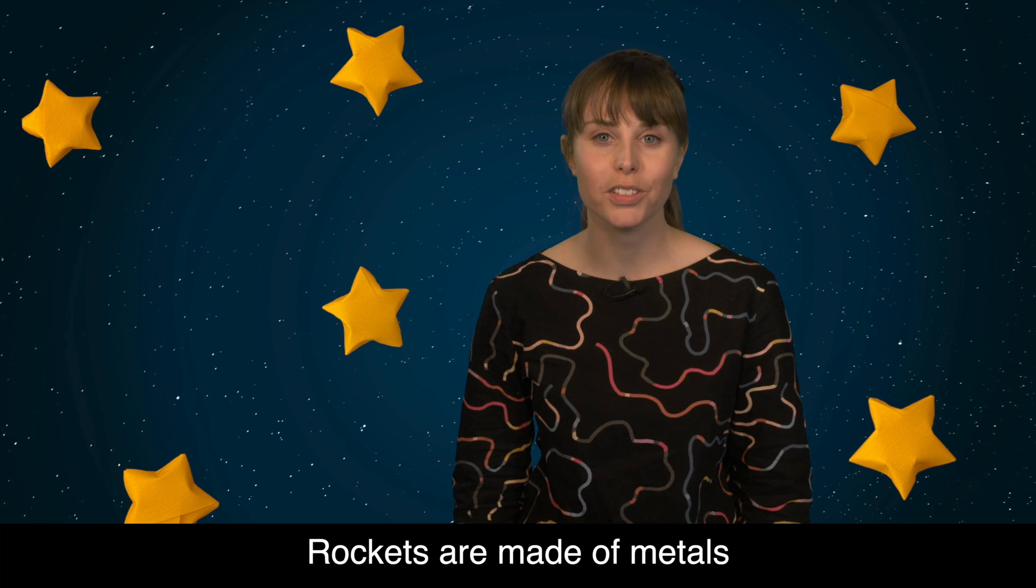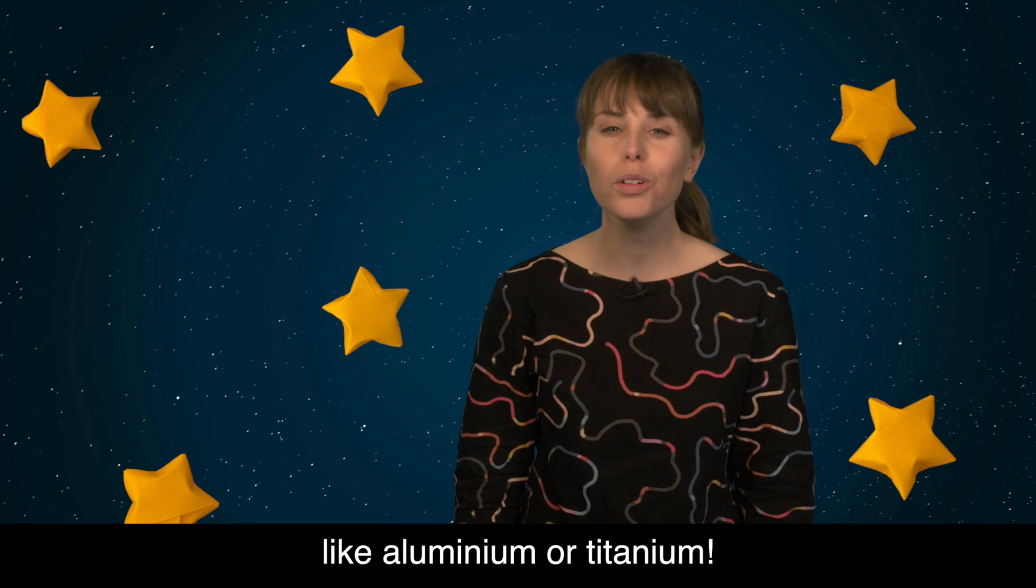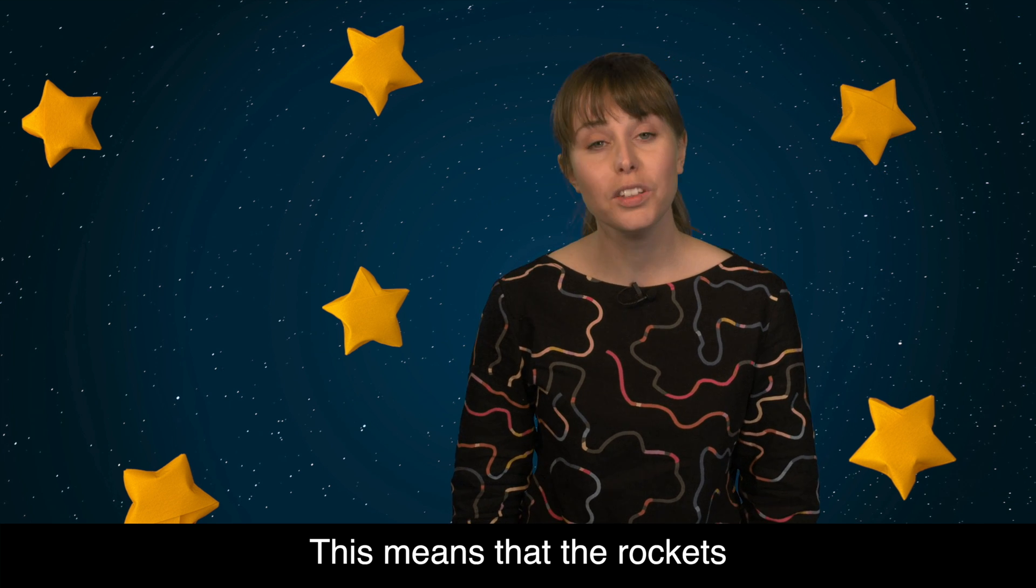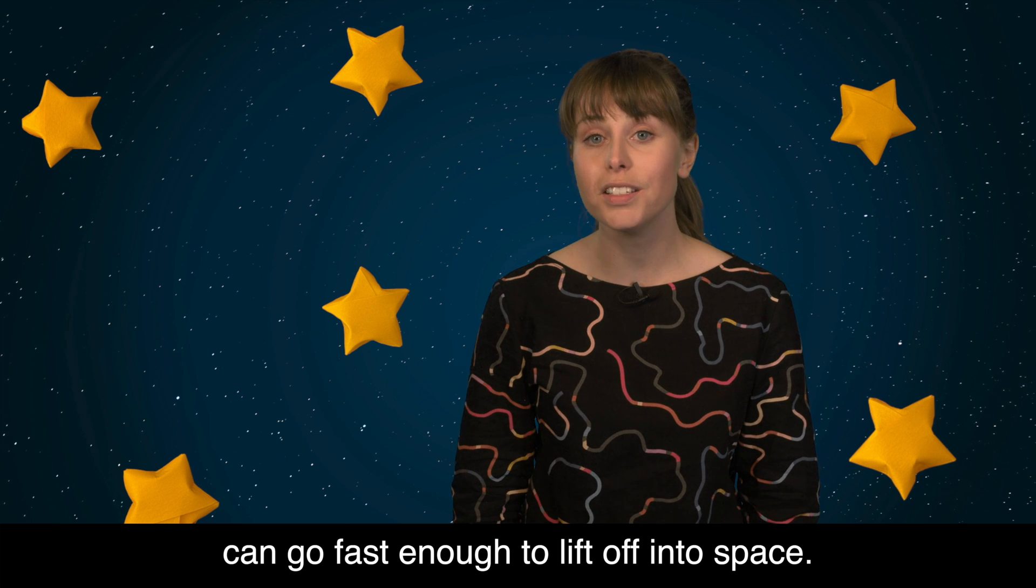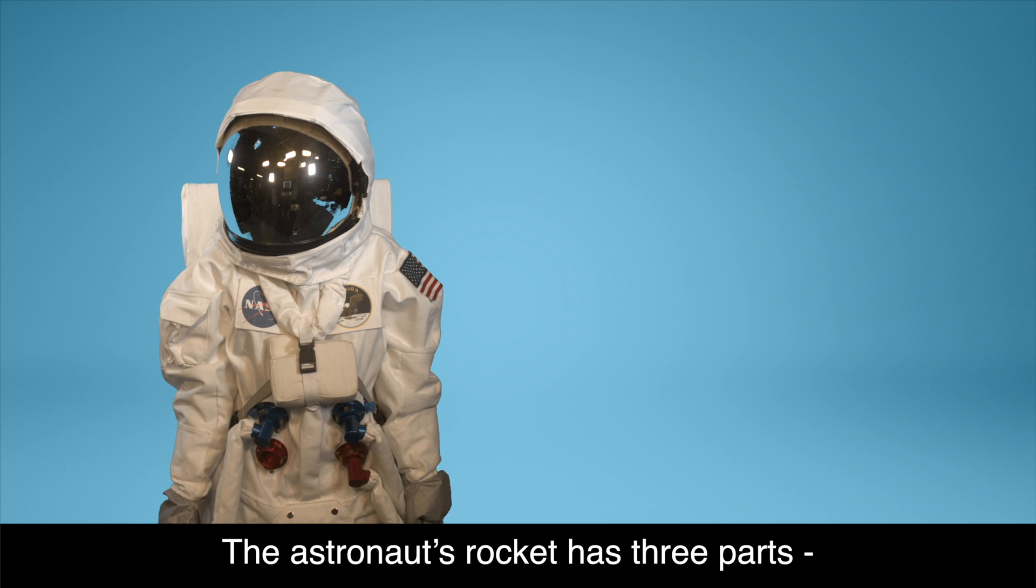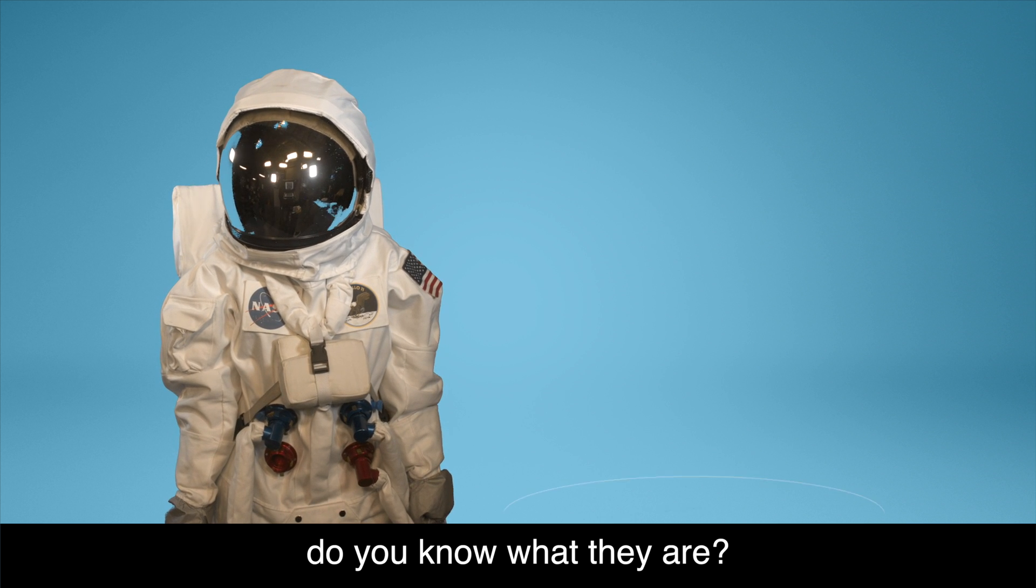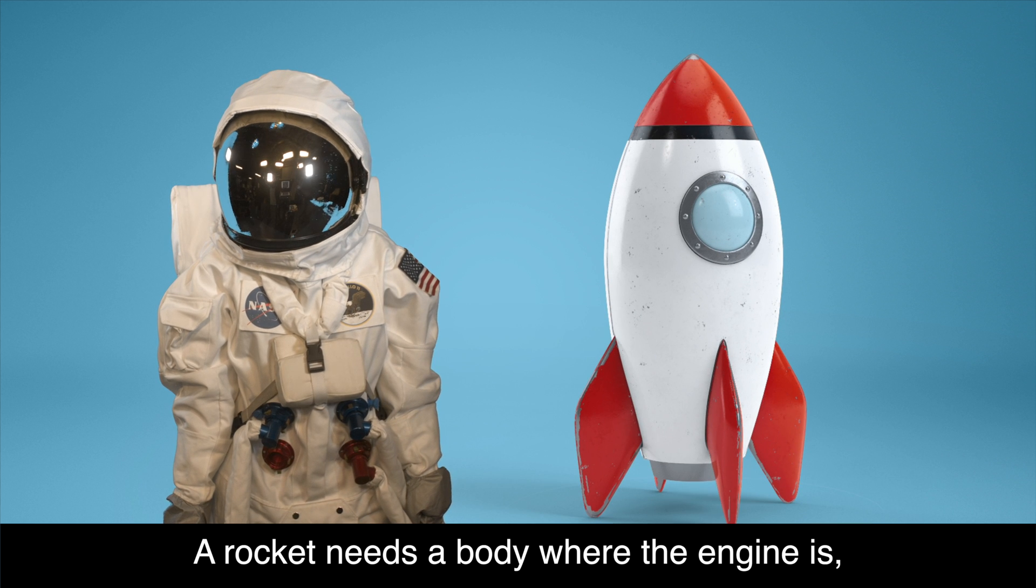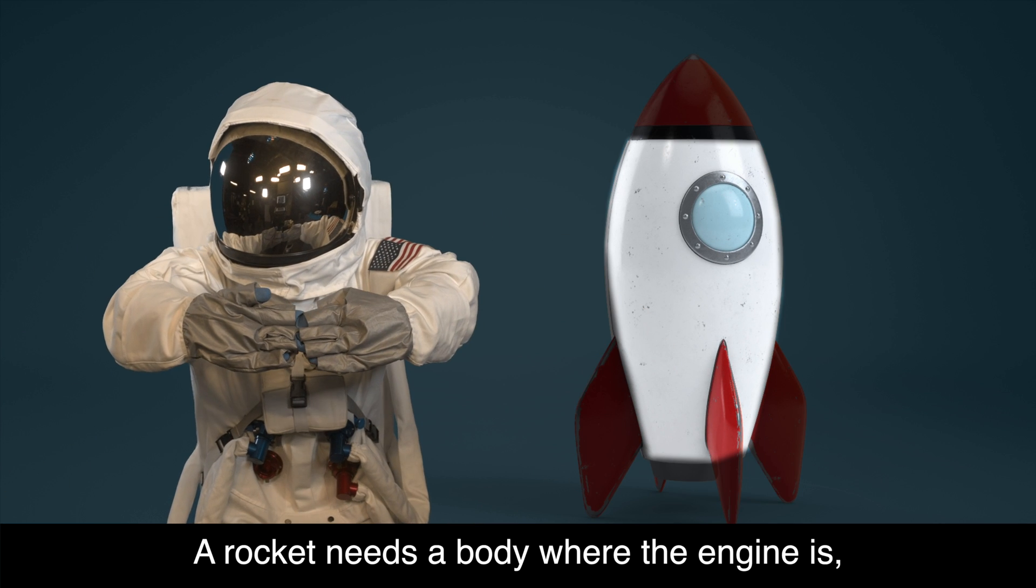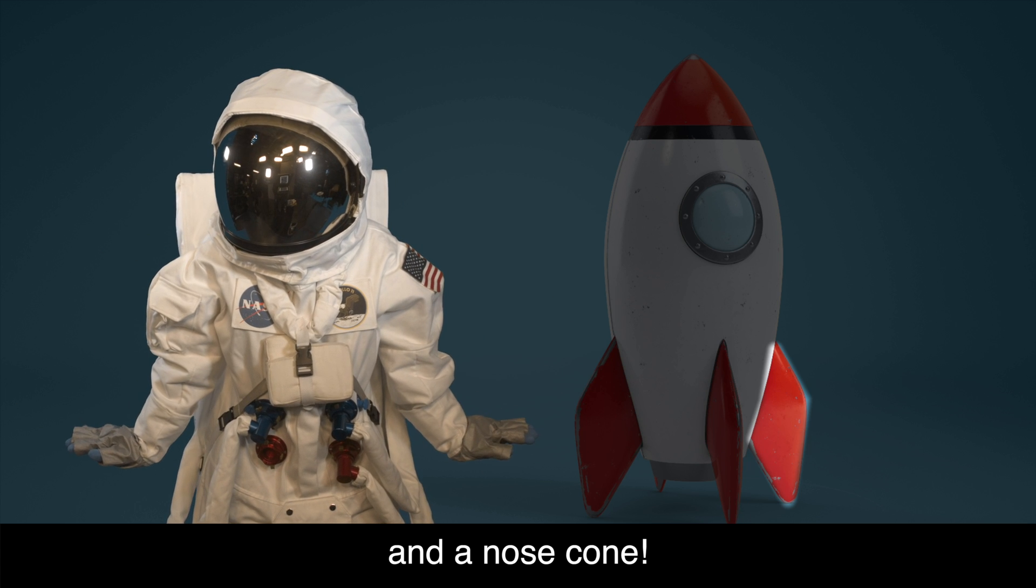What materials would you use to build a rocket? Rockets are made of metals that are strong and lightweight, like aluminium or titanium. This means that the rockets can go fast enough to lift off into space. The astronaut's rocket has three parts. Do you know what they are? A rocket needs a body where the engine is, fins and a nose cone.